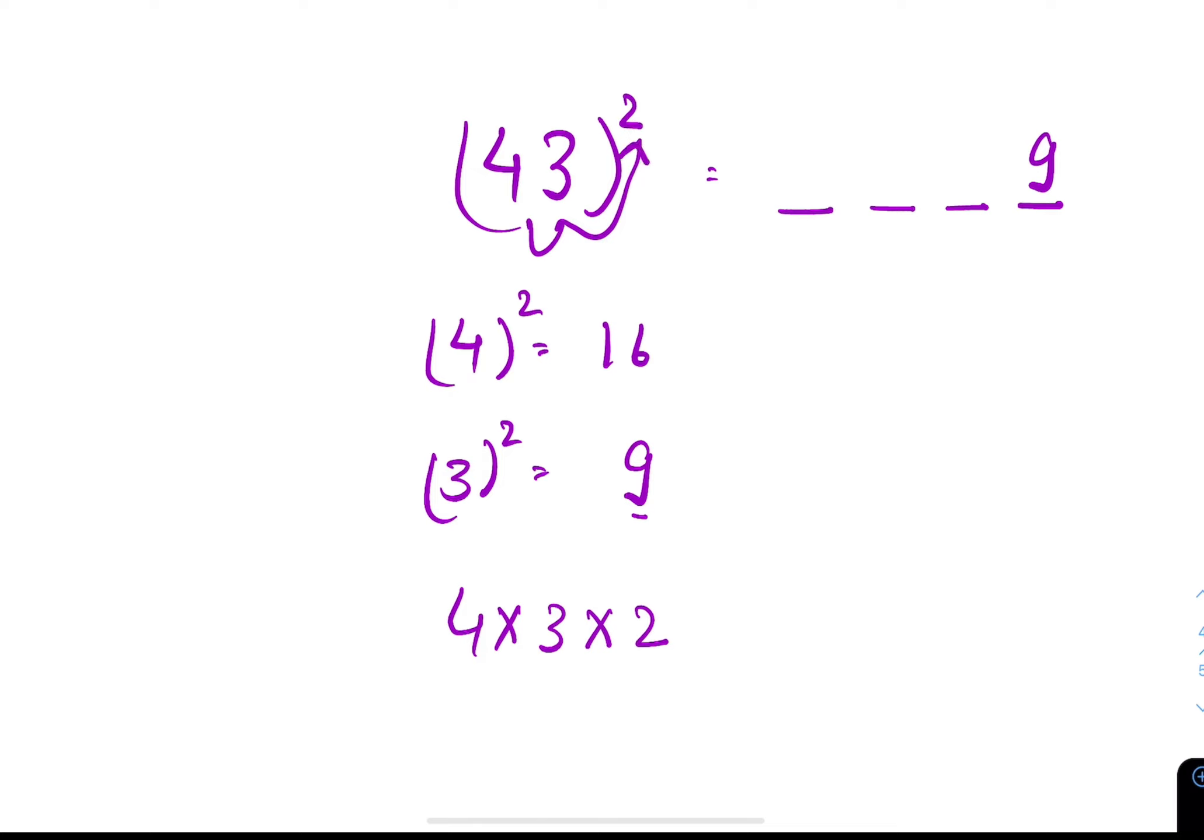Take another example. Let us take some big digit. 43 square. Write 4 square 16. 3 square is 9. We will write 9 at the end. Now 4 into 3 into 2.